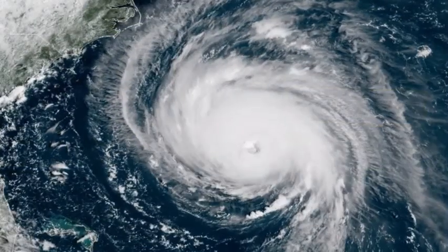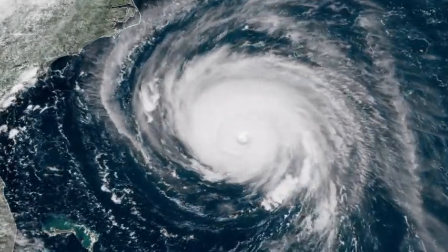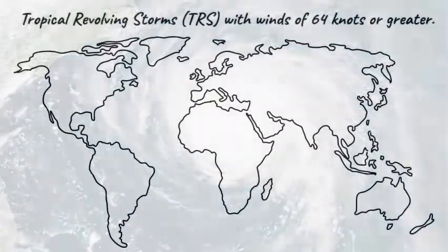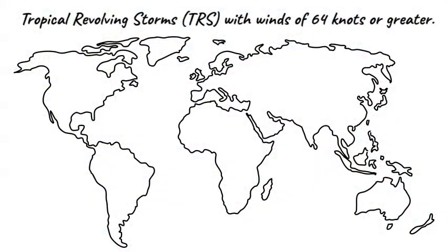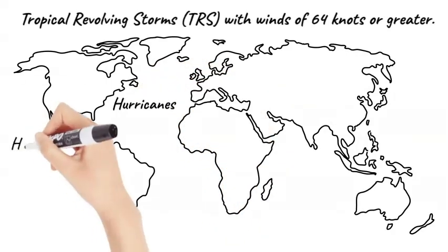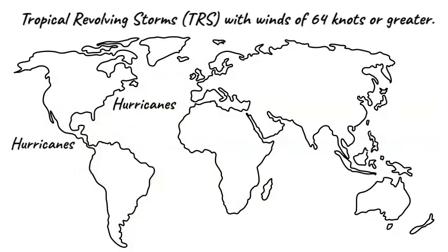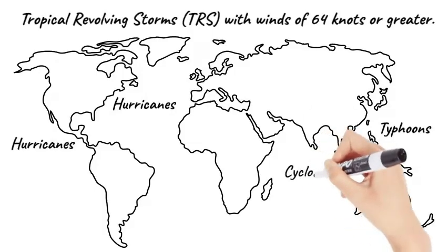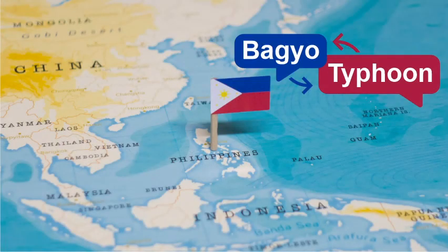Tropical revolving storms with winds of 64 knots or greater form in oceans around the world. However, their names vary depending on where they develop. In the North Atlantic and Eastern Pacific, they are called hurricanes. In the Western Pacific, typhoons. In the North Indian Ocean, cyclones. These storms may even have local names, for example, Baguio in the Philippines.